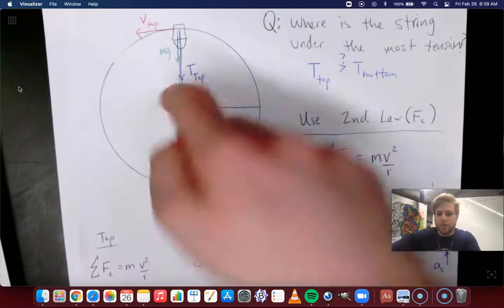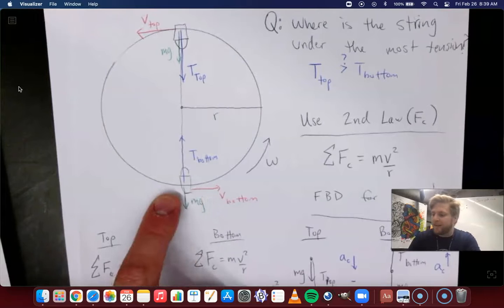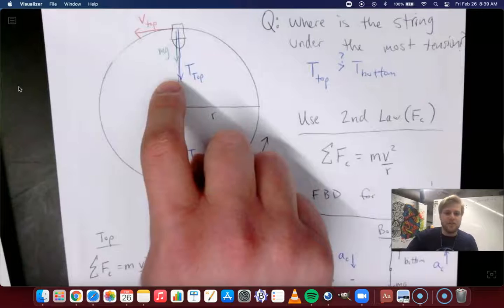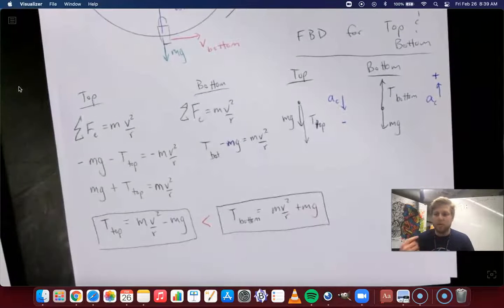So to say that again, at the top, gravity helps you pull the thing in the circle. Whereas at the bottom, gravity's trying to pull the darn thing out of a circle. Keep it going in a straight line. You want to pull it out of that straight line into the circle. So there you have it, folks. The tension at the bottom would be larger.